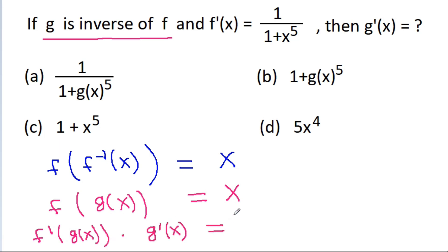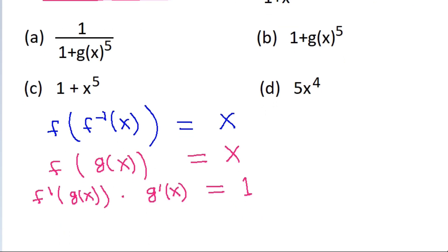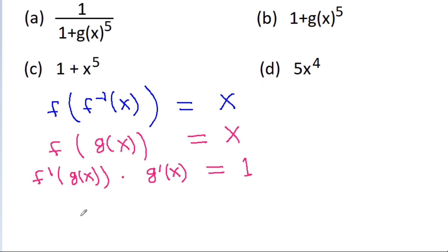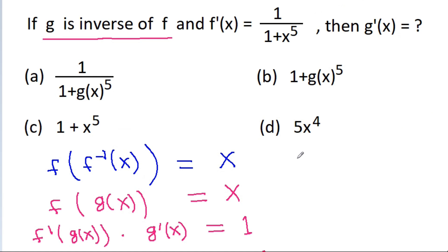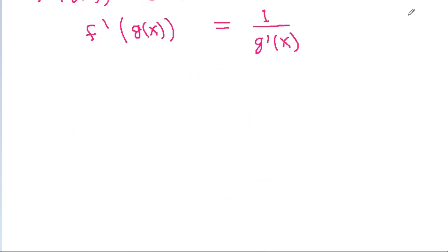So f prime of g(x) is equal to 1 by g prime x. We have given that f prime of x is equal to 1 by 1 plus x power 5.